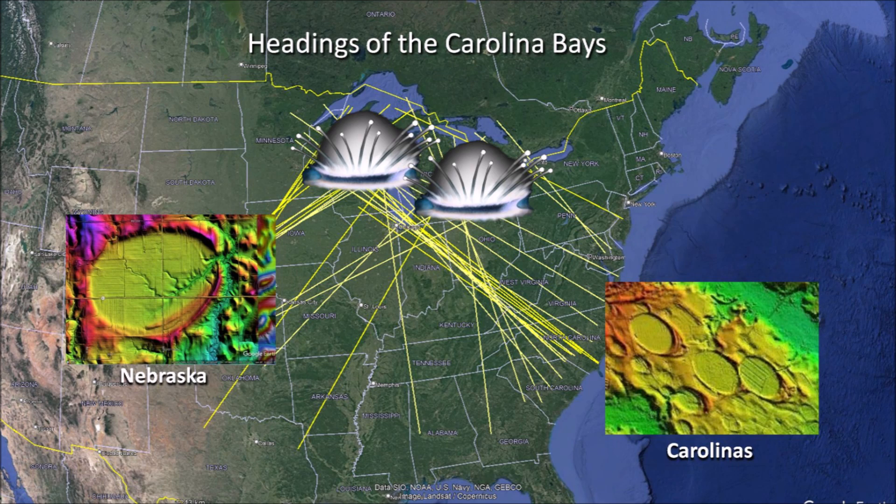The basins do not have any evidence of extraterrestrial material, so they were not made by meteorite impacts. The best explanation for the elliptical geometry of these basins is that they formed as penetration funnels by secondary impacts of glacier ice pieces ejected by one or more extraterrestrial impacts on the Laurentide Ice Sheet during the Ice Age.